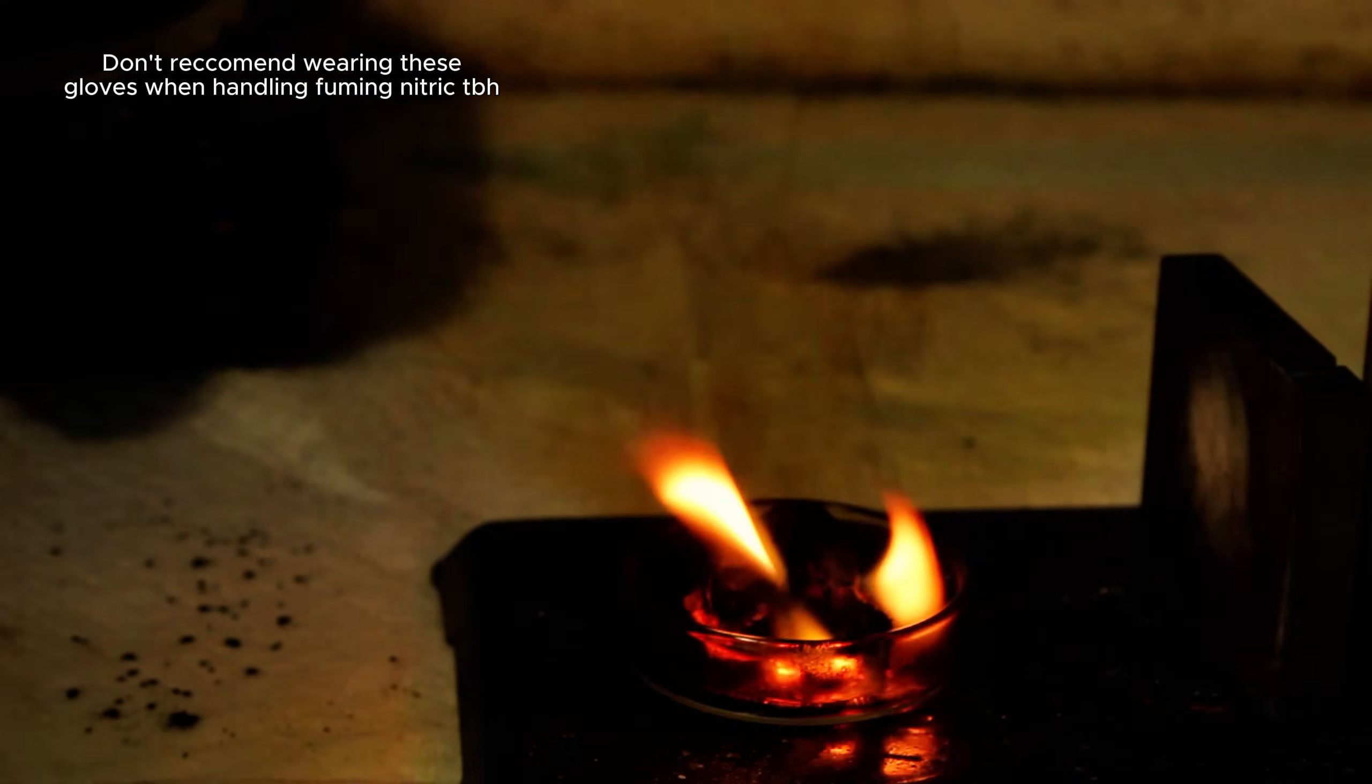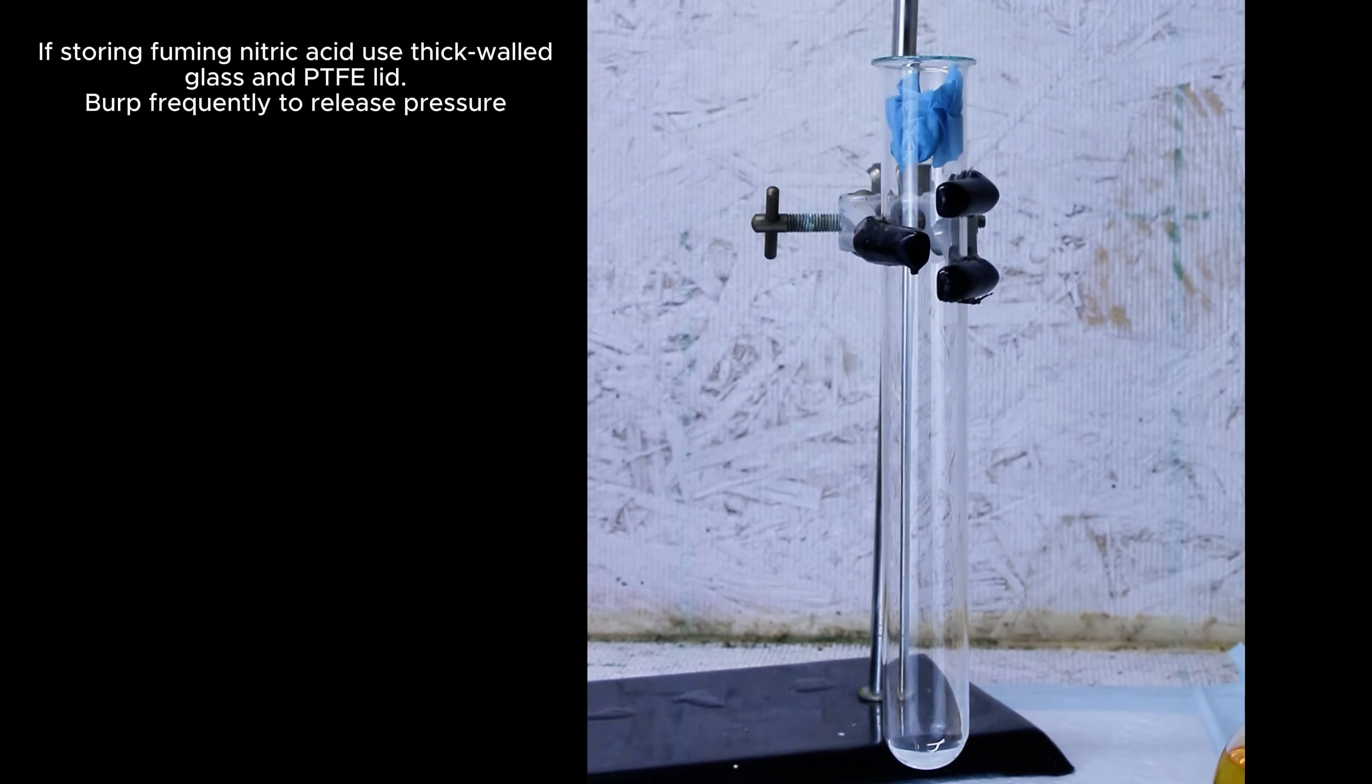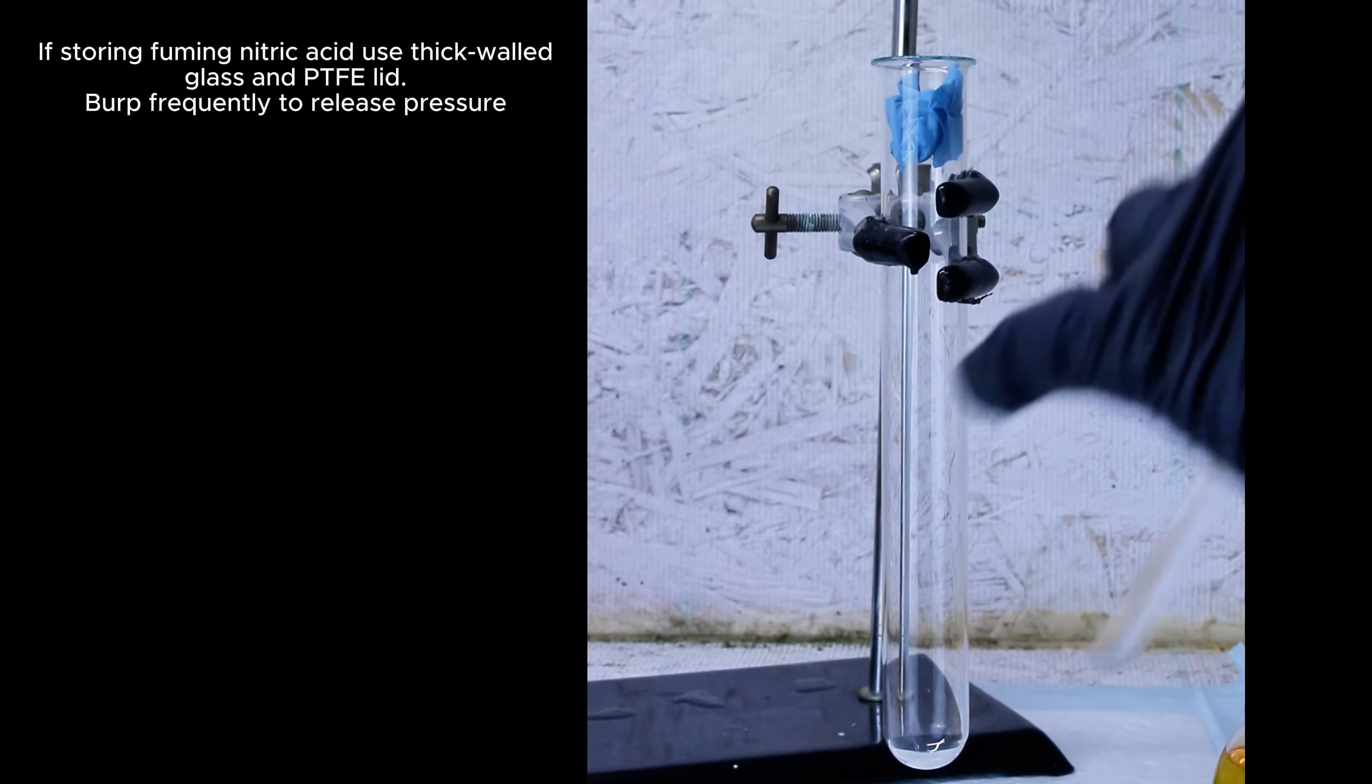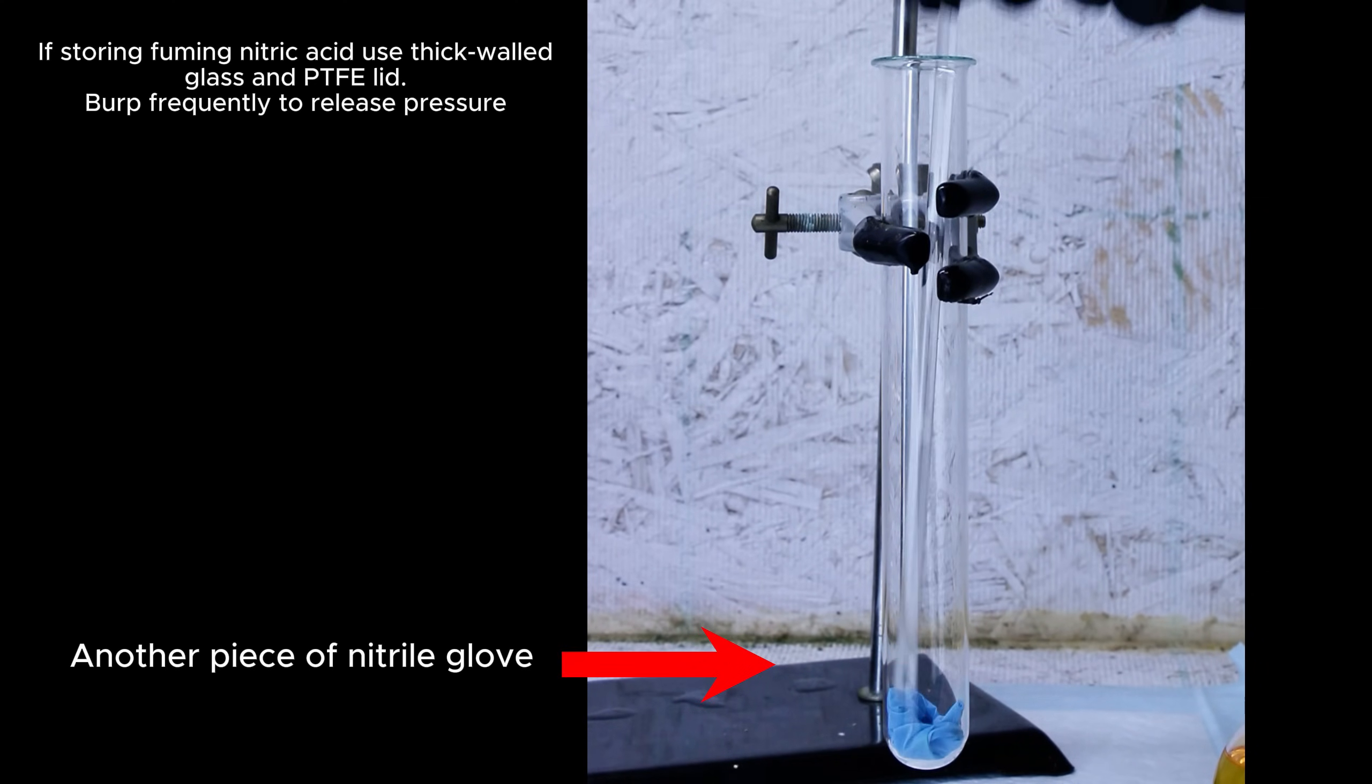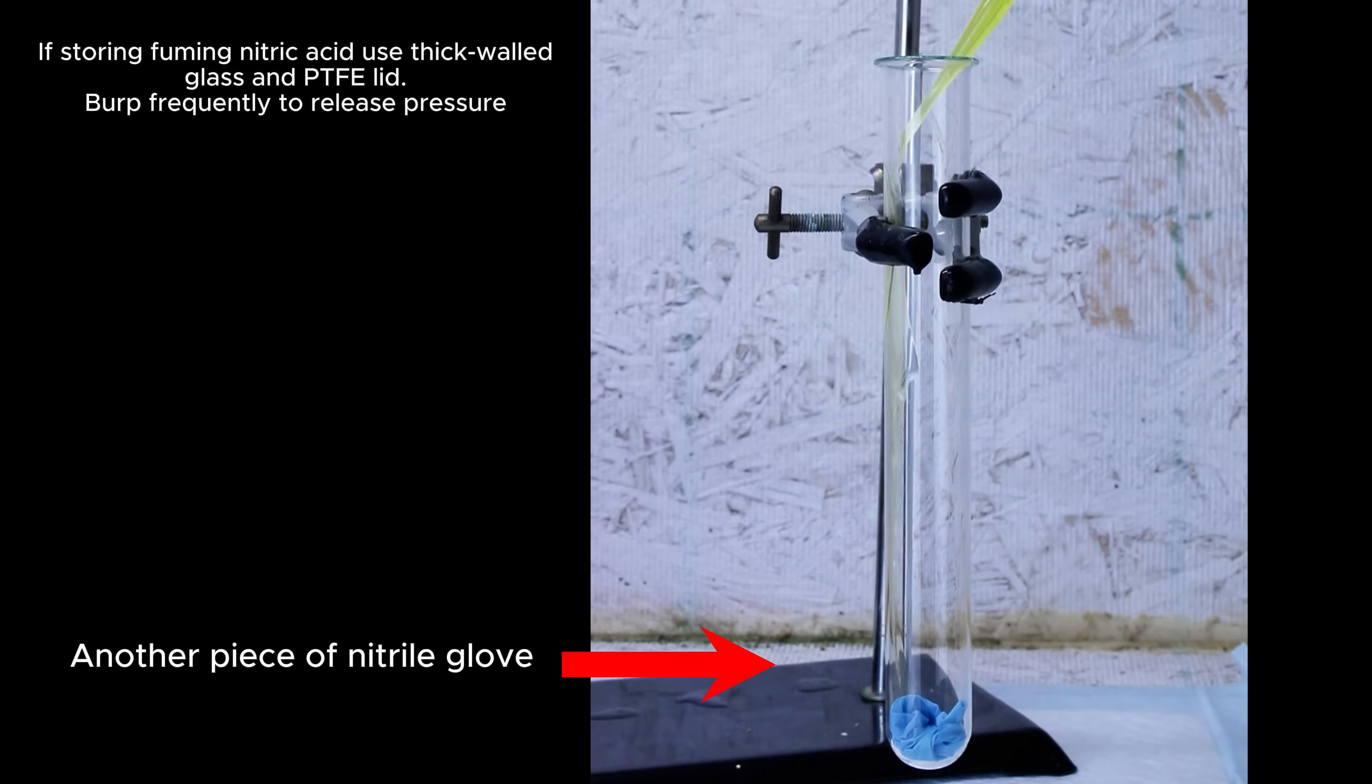As for storage, fuming nitric acid will slowly decompose at ambient temperatures which will pressurize whatever container is being stored in at the time. That said, containers of fuming nitric acid are almost always made of very high density glass and routinely burped to prevent pressurization.